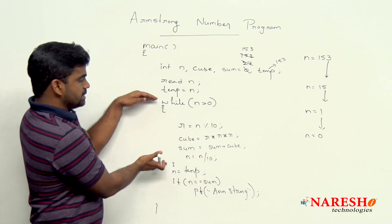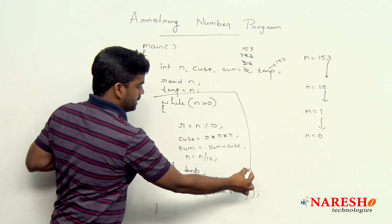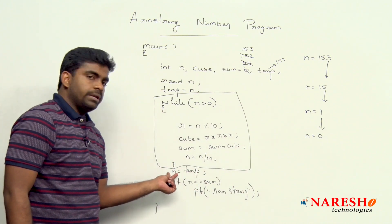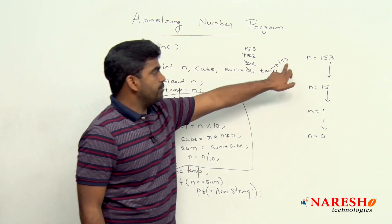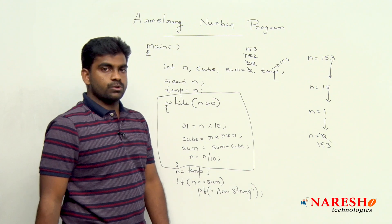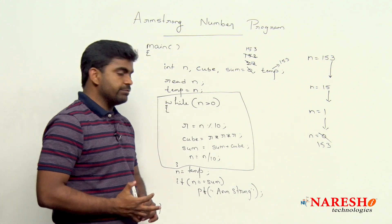After finding this sum, once this while loop execution is completed, the temp value again recollect into n. Temp value 153 will be stored into n. N become 153 again.